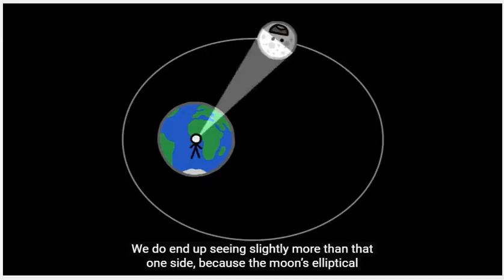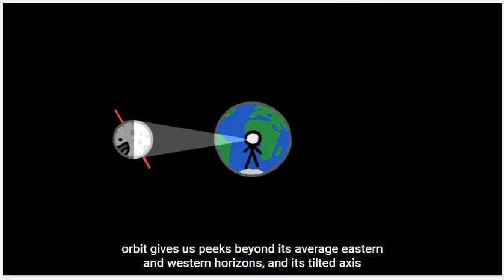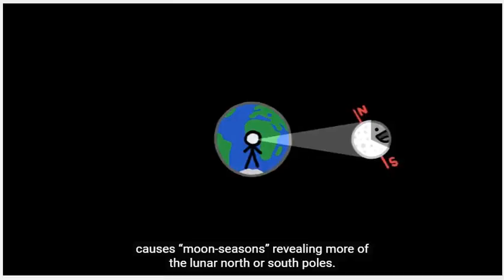We do end up seeing some of that far side, because the Moon's elliptical orbit gives us peaks beyond its average eastern and western horizons, and its tilted axis causes Moon seasons, revealing more of the lunar north or south poles. But those glimpses only add up to an extra 9%, leaving 41% of the Moon hidden from Earth.